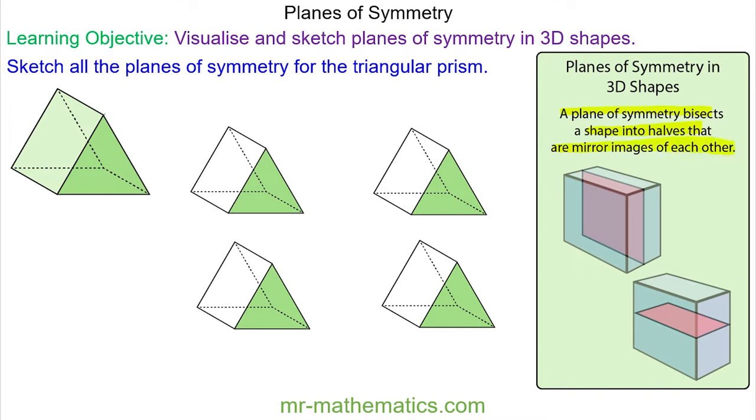We're going to begin with the triangular prism, and the first line of symmetry for the triangle is a vertical line here. We can turn this into a plane of symmetry by including the depth.